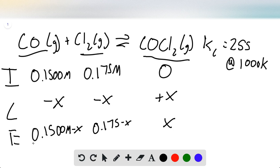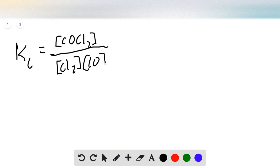These are our equilibrium concentrations and we have the value of our equilibrium constant, so we can set up the following equation. Kc equals the concentration of products COCl2 over the concentration of reactants Cl2 times CO. This equals 255, so we plug in our values: COCl2 is X, and Cl2 is 0.175 minus X, and CO is 0.1500 minus X.